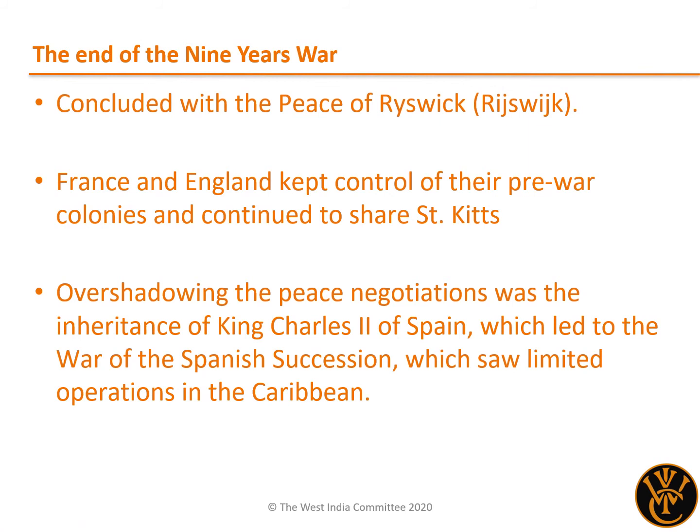The Nine Years' War came to an end with the Peace of Ryswick. Both France and England retained control of their pre-war colonies, continuing for the time being to share St Kitts. However, disputes over the inheritance of King Charles II of Spain, the last Habsburg monarch of that country, led to the War of the Spanish Succession, which would also see limited operations in the Caribbean.